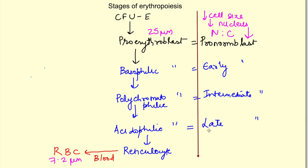The next common thing: all these stages can multiply and differentiate until the stage of late normoblast. This late normoblast doesn't have the capacity of multiplying, it can only differentiate. After this the number of cells is not going to increase.